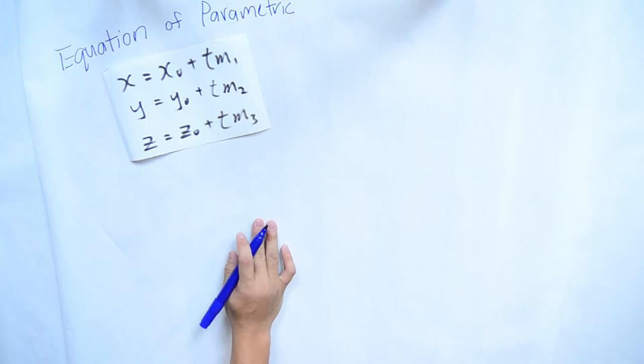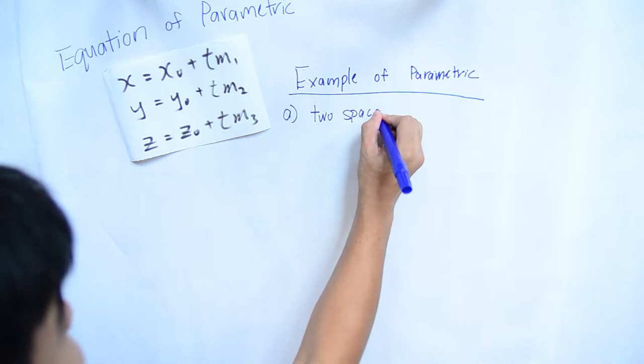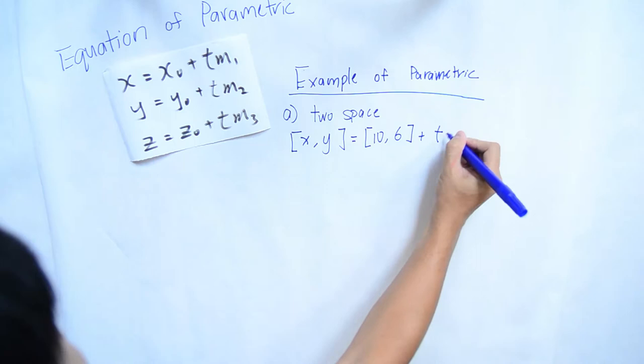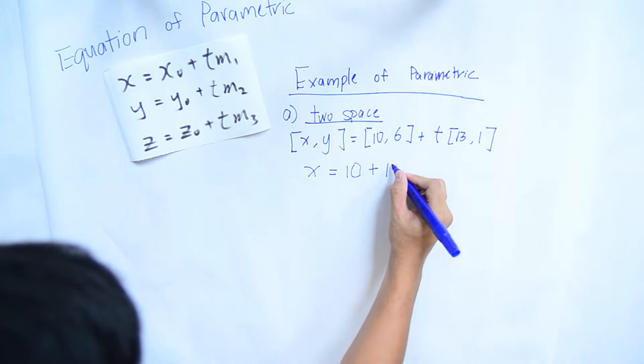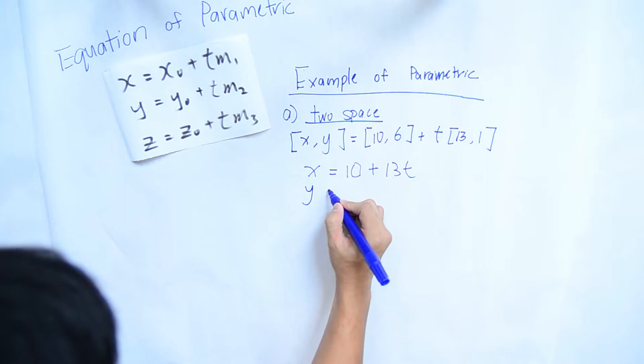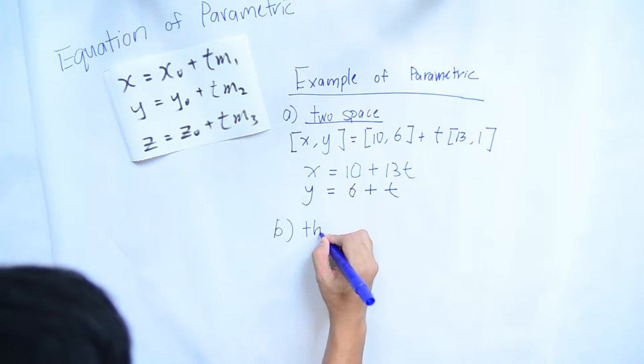Now I will give two examples of parametric equations. There are two kinds of questions: two-space and three-space. The first example is two-space. The equation is given: x equals 10 plus 13t, because the point is 10 and the direction is 13. y equals 6 plus t, because the y-point is 6 and the direction component is 1.